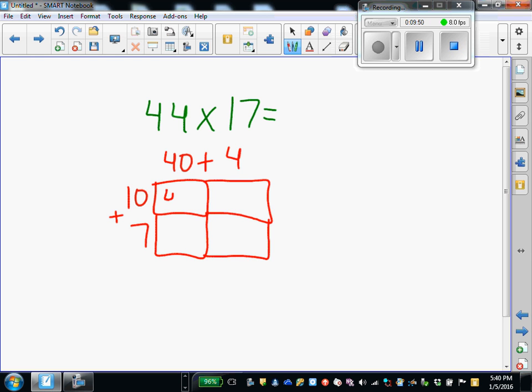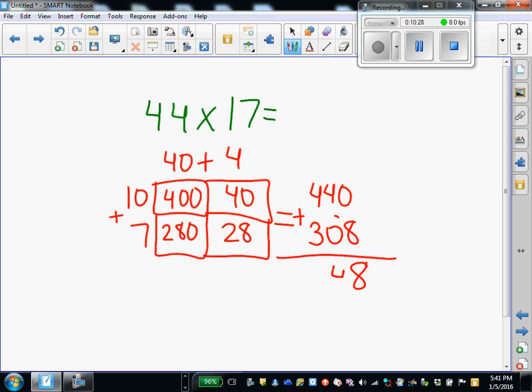10 times 40, 400. 10 times 4, 40. 7 times 40, 280. 7 times 4, 28. Add together. Sorry. 280 plus 28 is the same as 308. Add together. 748 is our product.